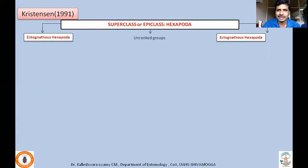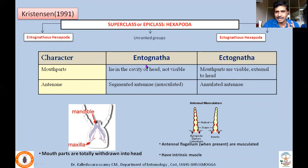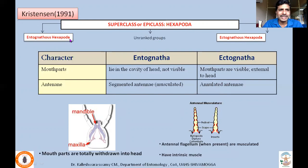The distinguishing characters of Entognathous and Ectognathous Hexapoda: Entognatha means the mouthparts lie in a cavity of the head and are not visible — mandibles and maxillae are drawn into the head and not externally exposed. In Ectognatha, mouthparts are visible external to the head. Regarding antennae, in Entognathous Hexapoda (also called non-insectan hexapods), intrinsic muscles are found in the flagellar segments, which are absent in Ectognathous Hexapoda. Antennae with intrinsic muscles in all flagellar segments are called segmented antennae, whereas those without are called annulated antennae — found in Ectognathous Hexapoda.